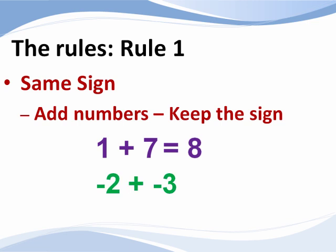Negative 2 plus a negative 3. Both numbers are negative. So add the digits 2 plus 3 and keep the sign. The answer is negative 5.